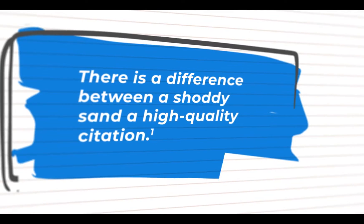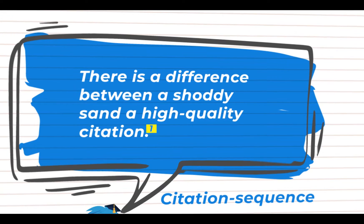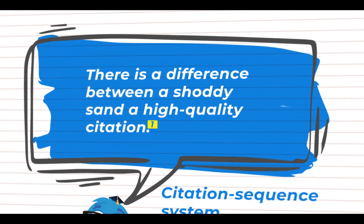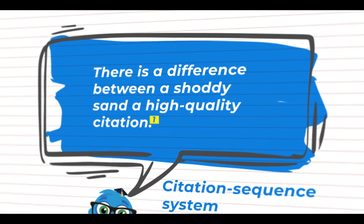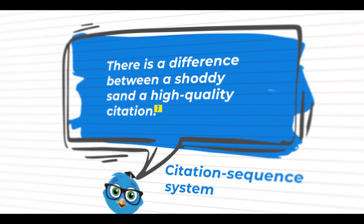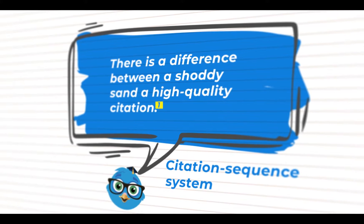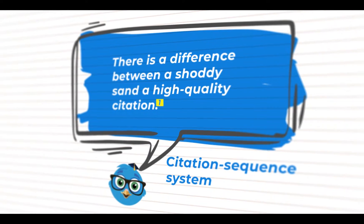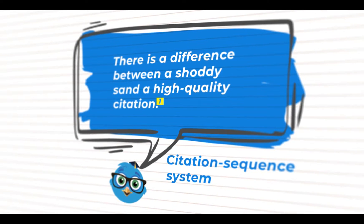The citation sequence system implies you use Arabic numeral superscript to indicate the source. The first source you mention in the paper will have numeral 1 in-text, the second source will have numeral 2, and so on. If you mention the same source a second time, it still has the same numeral. Later, we will connect these numerals with a reference list.